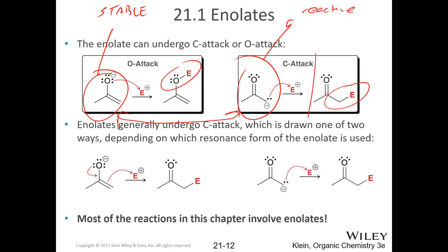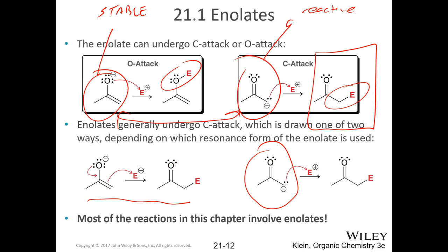We form the enolate and end up with the carbon anion doing the attacking — almost exclusively. Very rarely do we see anything happen at oxygen other than resonance reforming the carbonyl. We can draw it either way: with the oxygen bearing the charge going through resonance to attack, or more cleanly with the negative directly on carbon. The right-side representation is cleaner, especially for complex mechanisms later in the chapter.